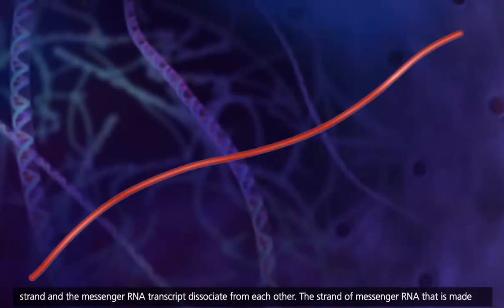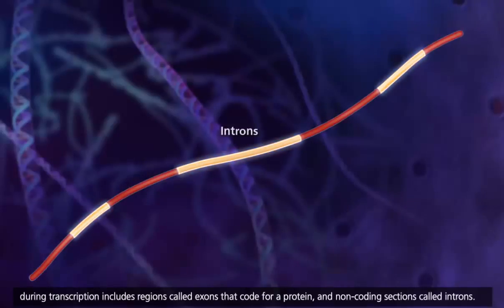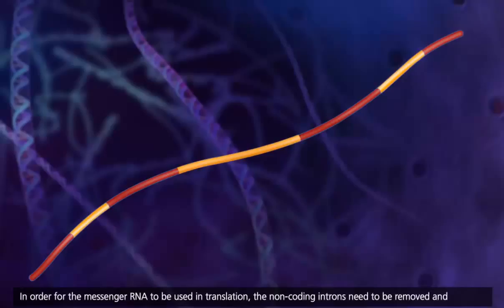The strand of messenger RNA that is made during transcription includes regions called exons that code for a protein, and non-coding sections called introns. In order for the messenger RNA to be used in translation, the non-coding introns need to be removed.